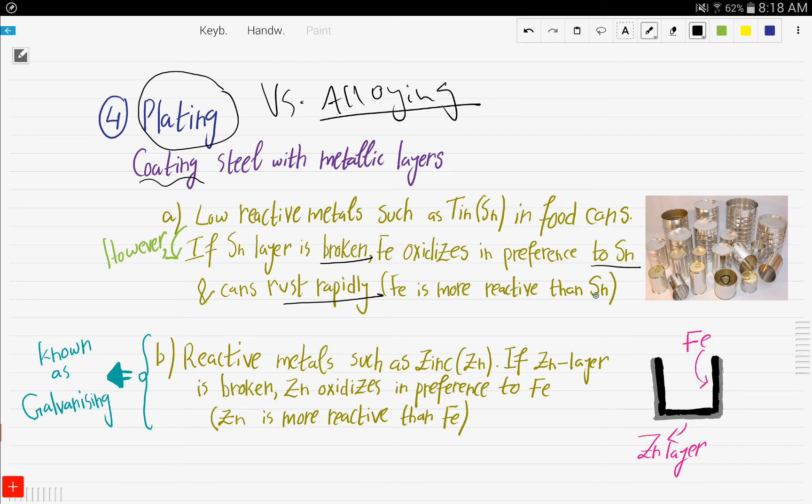That's because iron is more reactive than tin, and that's why it will rust in preference to tin. This is based on the reactivity of metal series, which was discussed in the chapter of metals and alloys. From that chapter, we know that iron is more reactive than tin.